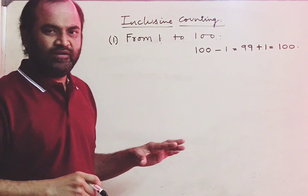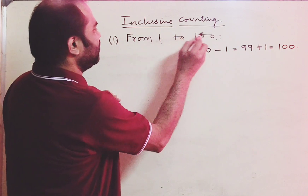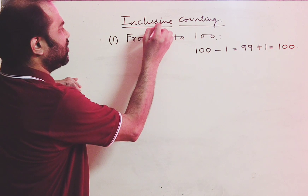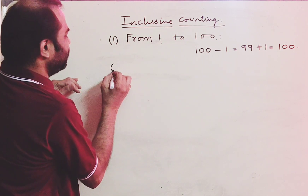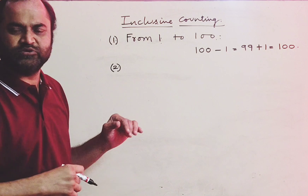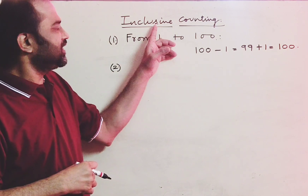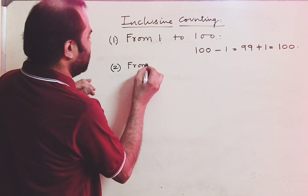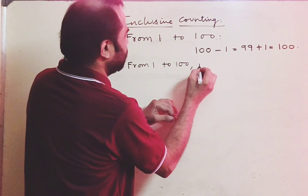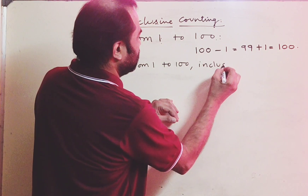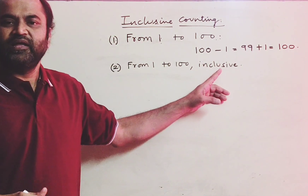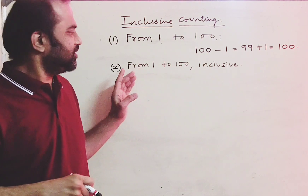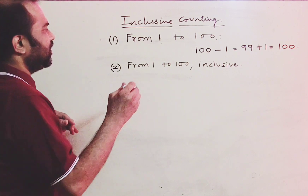So 100 is the number of integral numbers from 1 to 100 inclusive. Now in competitive exam questions you will find various expressions used for conveying inclusive counting. They may be written as 'from 1 to 100 inclusive', where the word inclusive conveys the fact to include both the first and last numbers in the range.